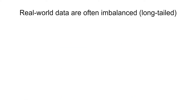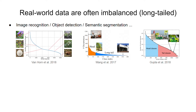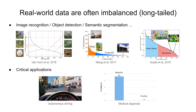Imbalanced data is ubiquitous in the real world, where large-scale datasets often exhibit long-tail label distributions. This phenomenon ranges across different applications, such as image recognition and object detection. Moreover, for critical applications related to safety or health, such as autonomous driving and medical diagnosis, the data are by their nature heavily imbalanced. This poses a great challenge for modern deep learning frameworks.